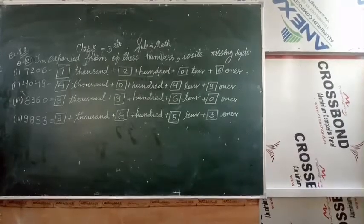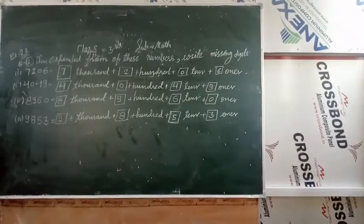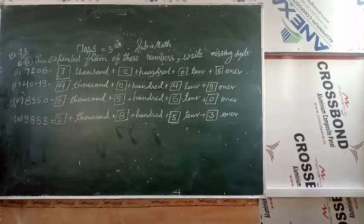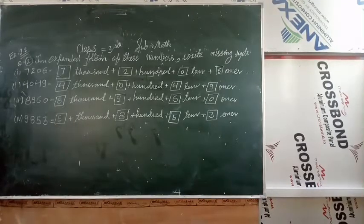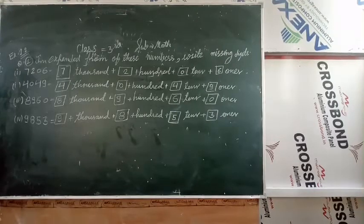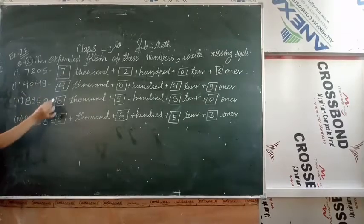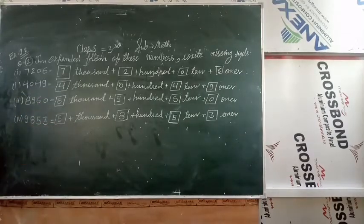Places values you can call it, expanded form the place values. Question number 2 hai, in expanded form of these numbers find the missing digits. Theek hai, aapko expanded form banate huye missing digit hai nikalni, jo blocks hai wo fill karne hai. Theek hai, maine already detail di hai, aapko bataya kaise fill karenge.